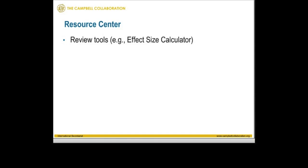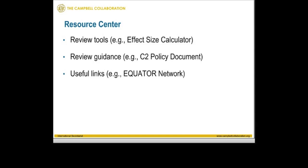We also maintain a resource center as part of our purview as the methods group. For example, we have tools there to help you complete a systematic review, such as the effect size calculator. We also provide review guidelines and produce policy documents on specific issues you might encounter in a systematic review, as well as useful links to resources like the Equator Network.